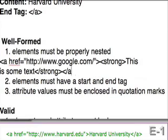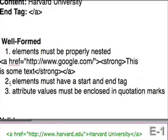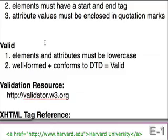The next rule in well-formedness is that elements must have a start tag and an end tag. In the cases we've shown so far, they all do — the anchor tag has a start tag and an end tag, and the strong element has a start tag and an end tag. The last rule in well-formedness is that attribute values must be enclosed in quotation marks. So next, let's talk about validity. Not only do all elements and all attributes have to be lowercase, but the page should be well-formed and conform to the Document Type Declaration that you've defined.